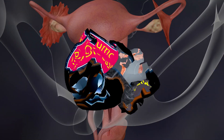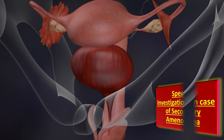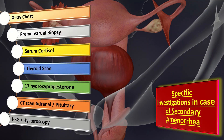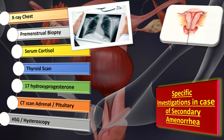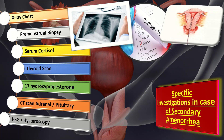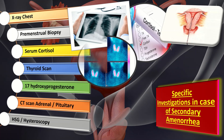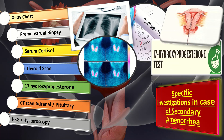Now let us talk about the specific investigations which are done in cases of secondary amenorrhea. First, X-ray chest is done to diagnose tuberculosis. Secondly, premenstrual biopsy is also done to diagnose pelvic tuberculosis. Third, serum cortisol level is done to diagnose Cushing's syndrome. Thyroid scan is done to diagnose thyroid dysfunction. 17-hydroxyprogesterone level is done to diagnose congenital adrenal hyperplasia.